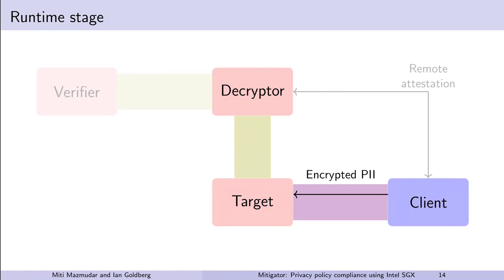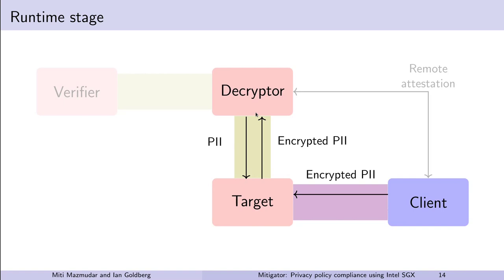The client then encrypts the user's personally identifiable information to the decryptor enclave and sends the ciphertext to the target. The target forwards this encrypted PII along the secure channel with the decryptor — that is, it encrypts it again to the decryptor. The decryptor removes two layers of encryption, one from the target and one from the client, and then re-encrypts the PII back to the target. The target website code has been checked by the verifier to only process this PII in ways that are compliant with the privacy policy.